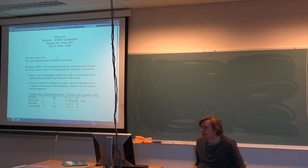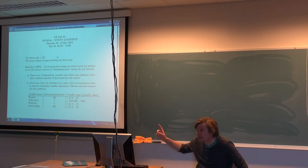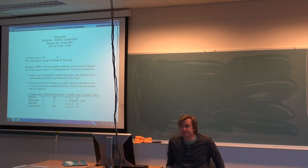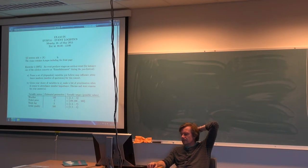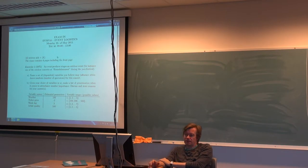Okay, then we move to the exam from two years ago. As you can see it's kind of the same decision then as now, all written aids plus calculator. So there is no change. Then we start with the first exercise. It says here an event producer stages an outdoor event. For instance one of the outdoor concerts at the Romsdalsmuseet during the Jazz Festival, so we have some feeling for what this is about.